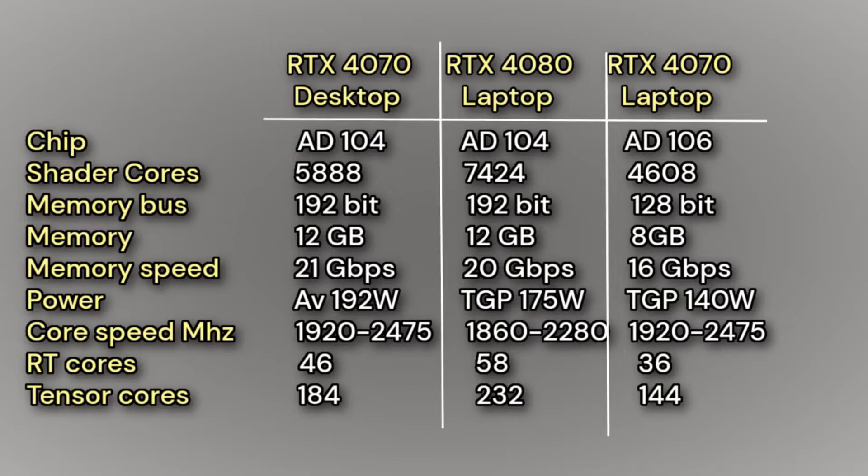We know that NVIDIA can push 200 watts to a mobile GPU if they wanted to. The 2080 Super could do it, and even my GTX 1080 laptop goes up to 195 watts. So why nerf the mobile GPU is anyone's guess. In reality, NVIDIA should have made the laptop 4080 with the exact same power and memory speed as the desktop 4070. With that rant out of the way, let's look at the results.